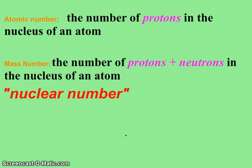The atomic number of an atom tells us the number of protons in the nucleus. The mass number, often times referred to as the nuclear number, tells us the number of protons plus the number of neutrons in the nucleus.